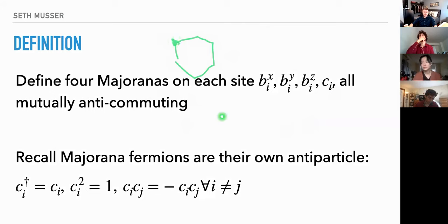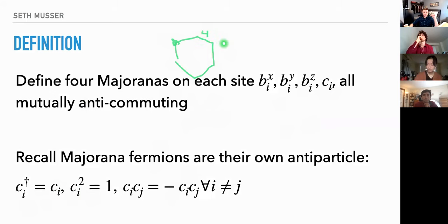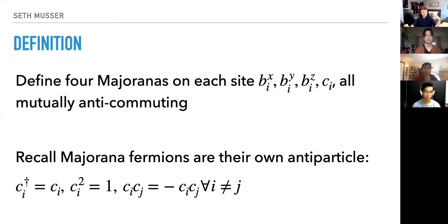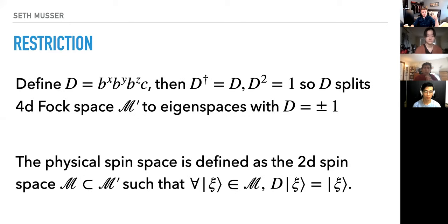Recall that Majorana fermions are real — they're their own antiparticle — and they anticommute. One thing to note is that each site on the lattice now has a four-dimensional Fock space, whereas the spin space was two-dimensional. So as some of the discussion before this talk was alluding to, we need a way to get rid of those extra degrees of freedom and get back to physical degrees of freedom. That comes in the form of the D operator that Kitaev defines: on each site we just take the product of these four Majoranas.